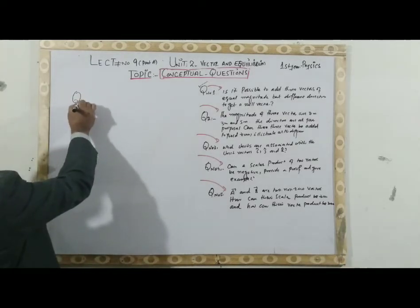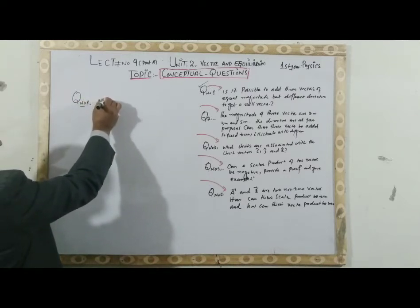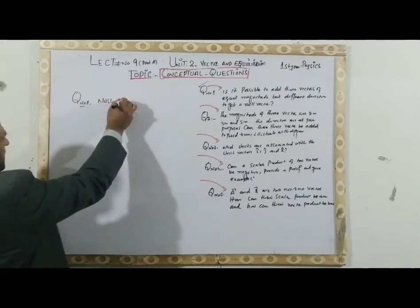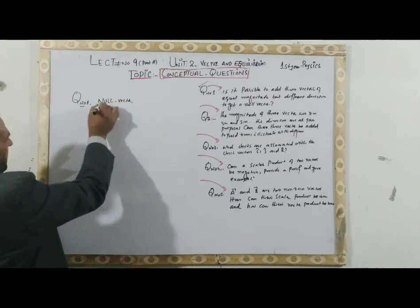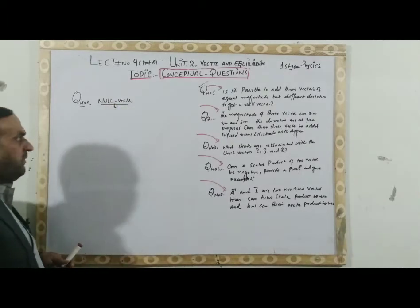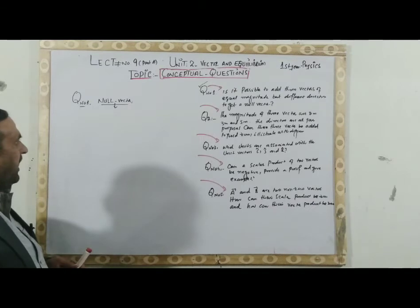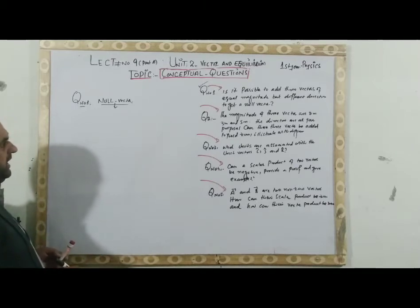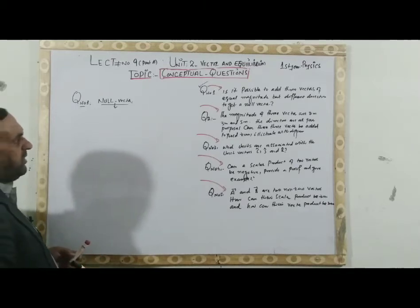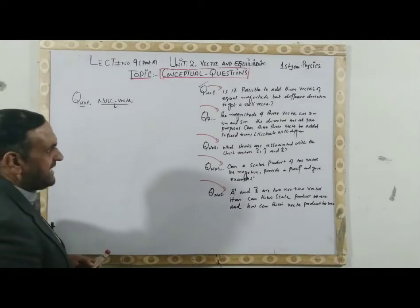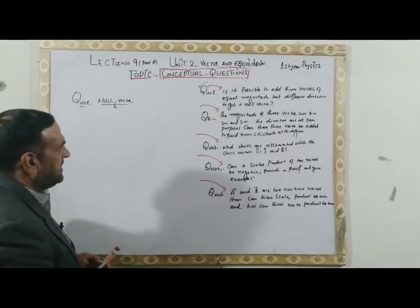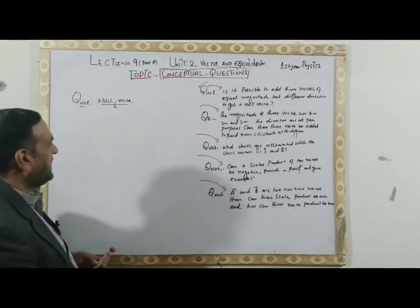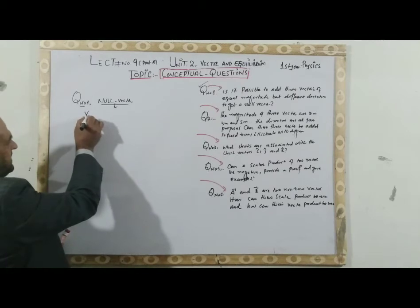Question number 1 — we will define the null vector. What is a null vector? Then we will answer the question. If we take three equal vectors and add them to get the resultant, the resultant is a null vector. So the answer is yes.